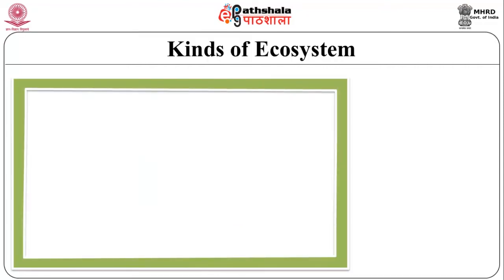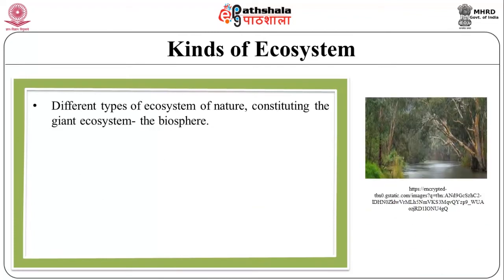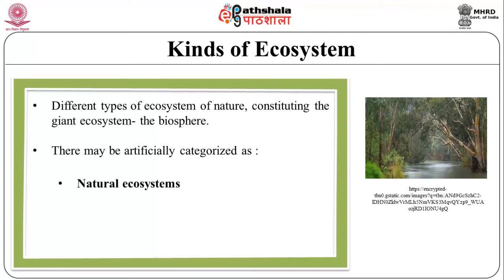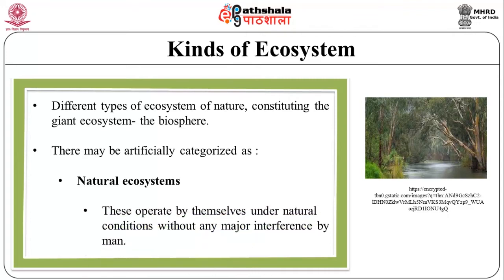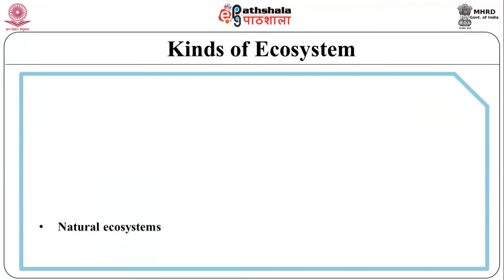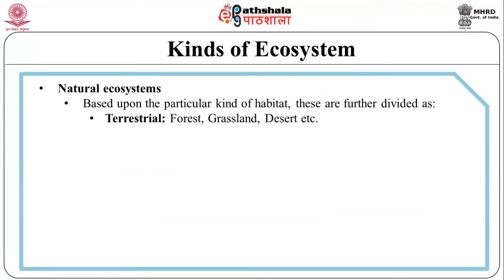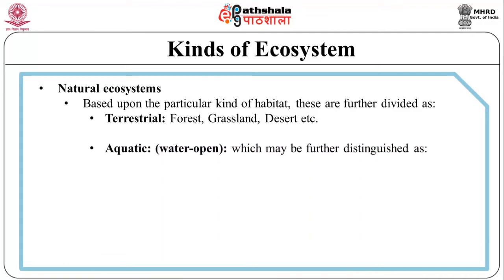What kinds of ecosystems do we need to study? The different types of ecosystems in nature constitute the biosphere as seen in the figure. Many of them are artificially categorized as well. The first one is the natural ecosystem. These are operated by themselves under natural conditions without any major interference by man. Based on the type of habitat, they are further divided into terrestrial, which includes forest, grassland, deserts and so on. The second category is aquatic.